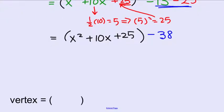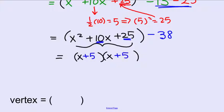Now we just factor this piece. You should be better at factoring now. Remember, these are perfect squares. So what are the factors of 25 that add to 10? Well, they're 5 and 5. Combine these two parentheses together as x plus 5 all squared and then minus 38.